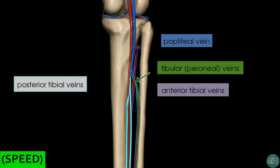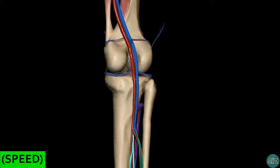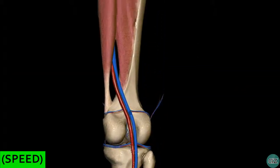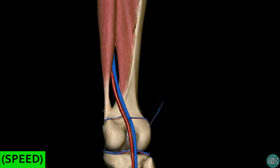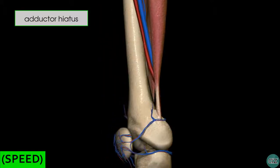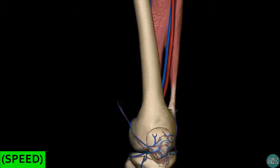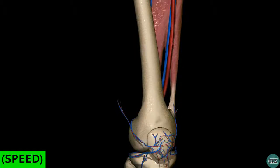Following the course of the popliteal vein, we can see that it follows the popliteal artery and passes through the adductor hiatus of the adductor magnus muscle, passing from the posterior compartment into the anterior compartment of the thigh. After passing through the hiatus into the anterior compartment, it is then known as the femoral vein.